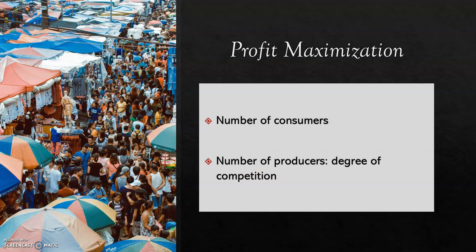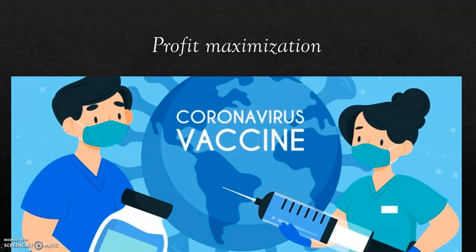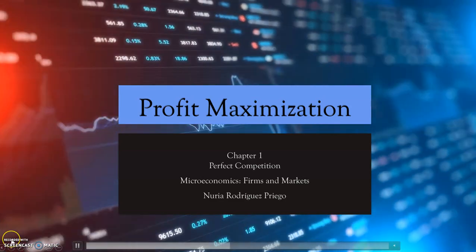For example, consider the COVID-19 vaccine. The first firm to produce a vaccine had market power to set the price, since any country wanting to vaccinate its citizens could only buy from that one company. After a few weeks or months, other labs produced alternative vaccines, so the first company began losing its market power. Countries gained access to other options and bought at lower prices, causing the market price to decrease.